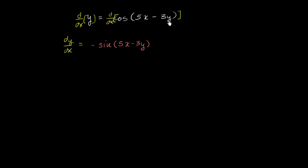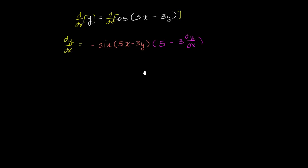What's the derivative of the something with respect to x? The derivative of 5x with respect to x is just equal to 5. And the derivative of negative 3y with respect to x is just negative 3 times dy/dx — negative 3 times the derivative of y with respect to x. And now we just need to solve for dy/dx.